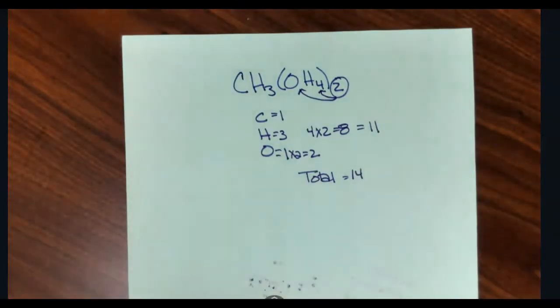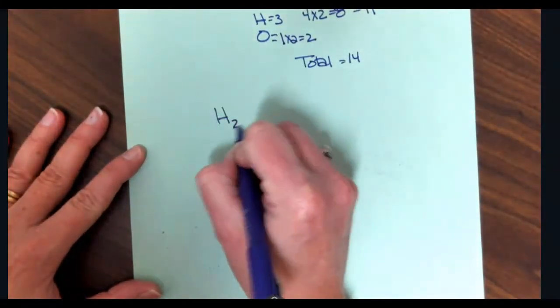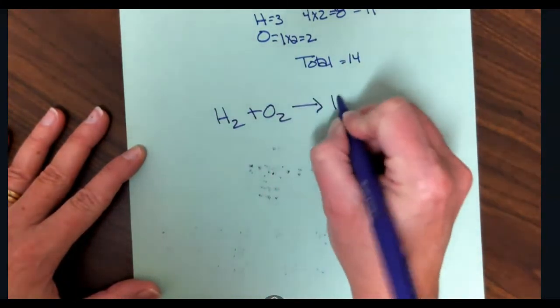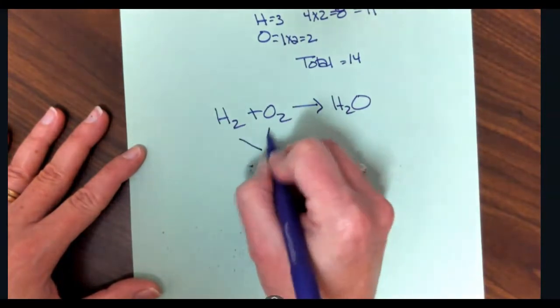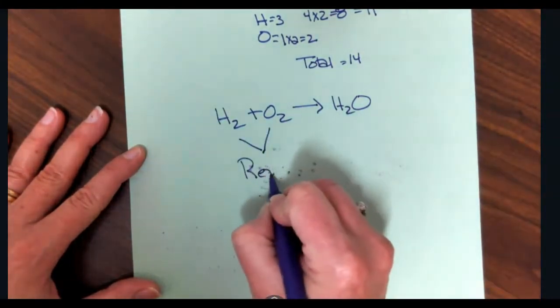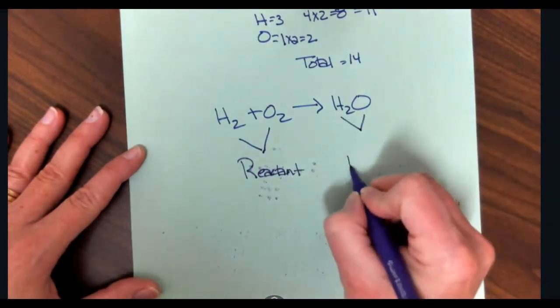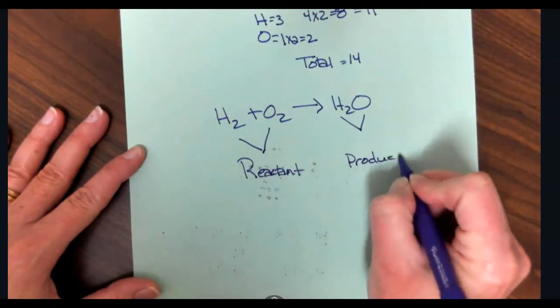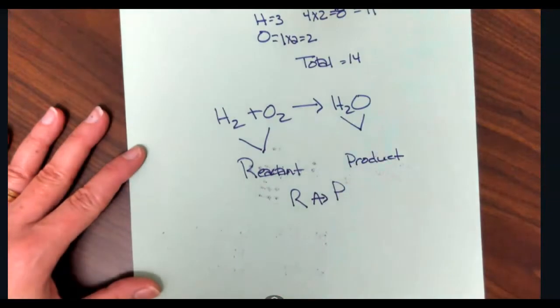Let's go to the next part. What about an equation? So if I look, everything to the left of the arrow is called a reactant. Everything to the right is called a product. Reactant, arrow, product.